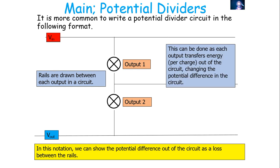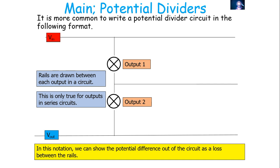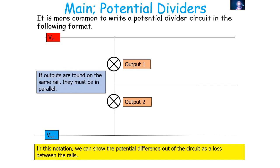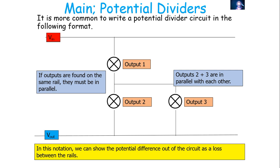The difference between the top rail and the middle rail will be the potential difference of output 1. This can be done as each output transfers energy per charge out of the circuit, changing the potential difference. This is only true for outputs in series circuits. In this notation, output 1 and output 2 are in a series circuit. If outputs are found on the same rail, they must be in parallel — so output 2 and output 3 are in parallel with each other, but in series with output 1.